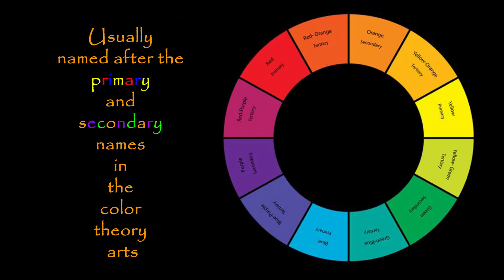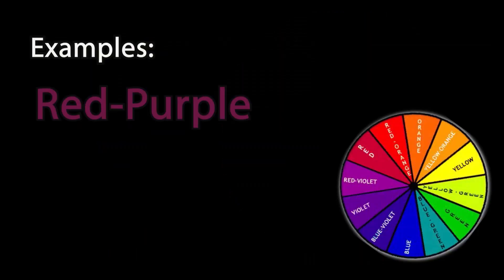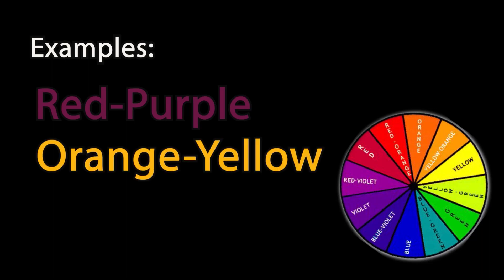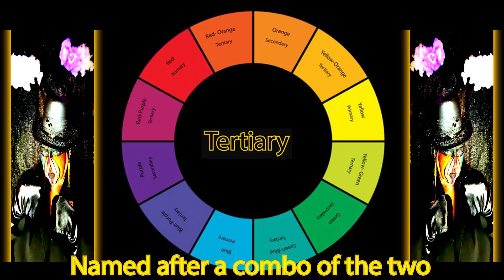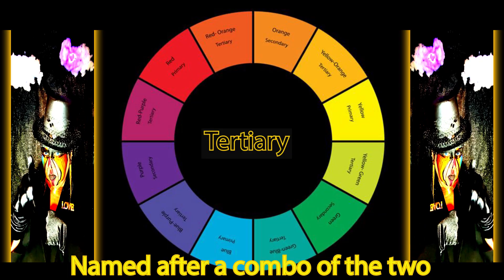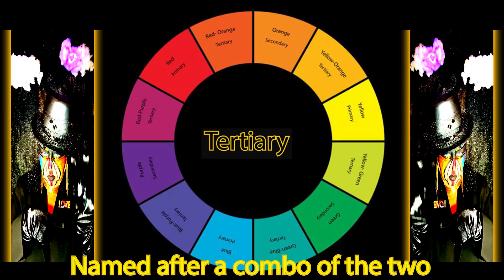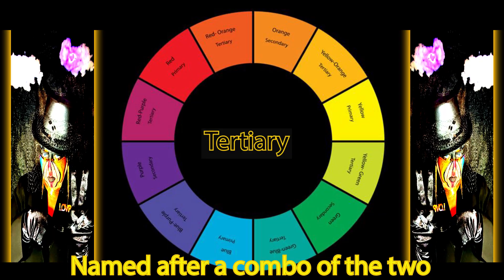Tertiary colors are usually named after the primary and secondary names in color theory. Examples include red-purple, orange-yellow, and green-blue. Tertiaries are named after a combination of the two colors.